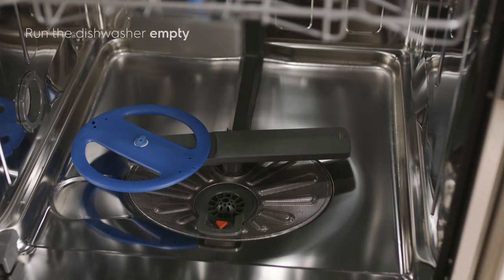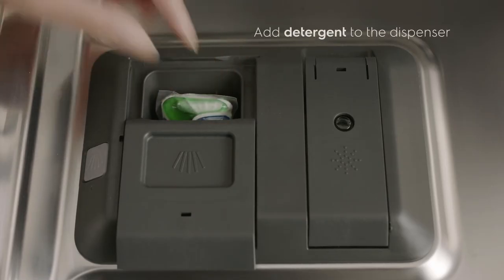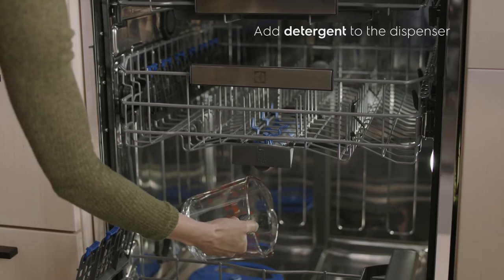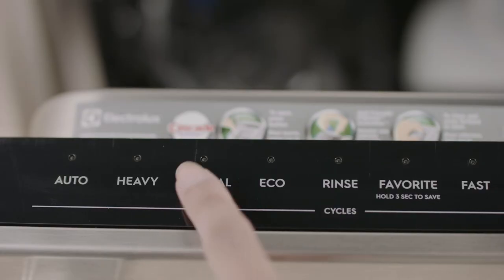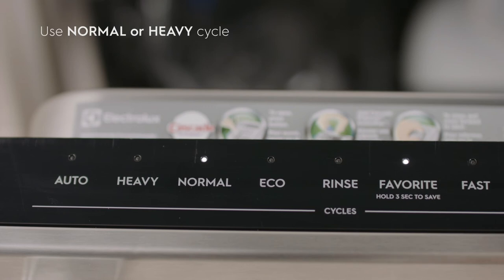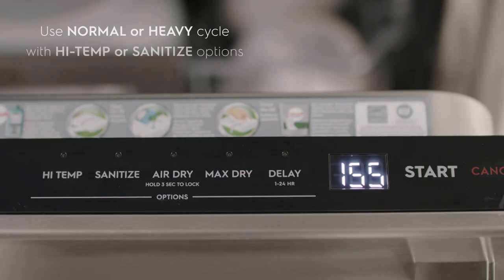Lastly, try giving the washer a thorough cleaning by running an empty cycle. You can either add detergent to the dispenser or pour one cup of white vinegar directly into the tub. Then, run the empty dishwasher using the normal or heavy cycle with high temp or sanitize options.